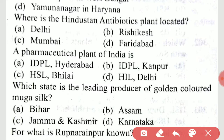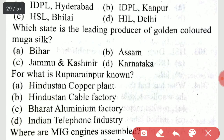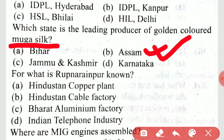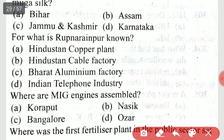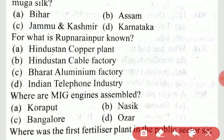A pharmaceutical plant of India is IDPL, Hyderabad. Which state is the leading producer of golden-colored Muga silk? It is Assam. What is Rupnarainpur known for? It is known for the Hindustan Cable Factory.